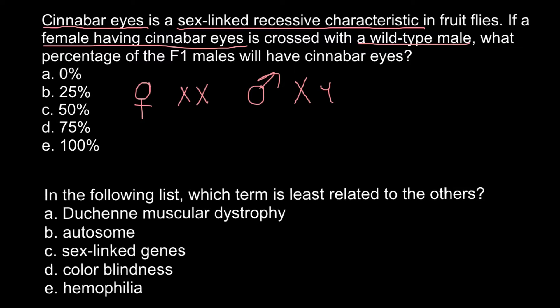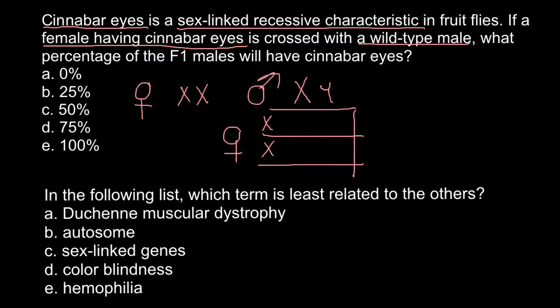Now we can find the progeny of such a cross. We just have to build a Punnett square, with the male on the top and the female on the side. So we have the male genotype on the top, and the female genotype — small x, small x — on the side. Now we can build the Punnett square and find what kinds of genotypes and phenotypes we would have.